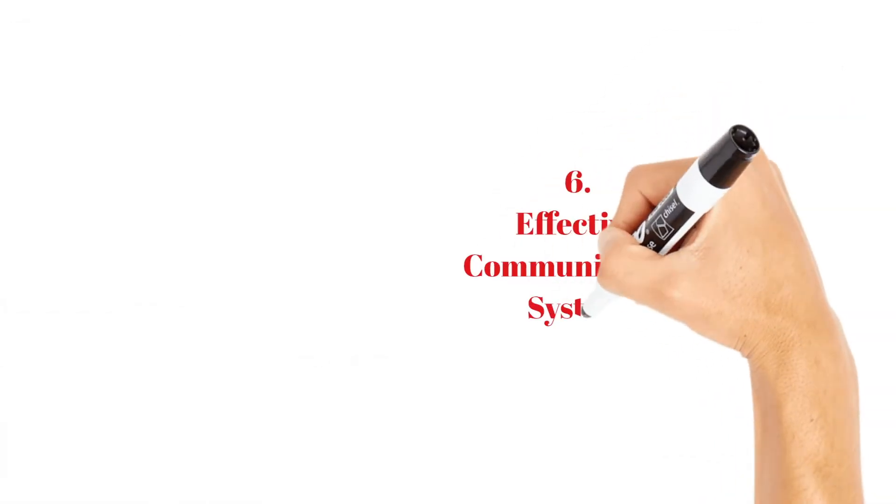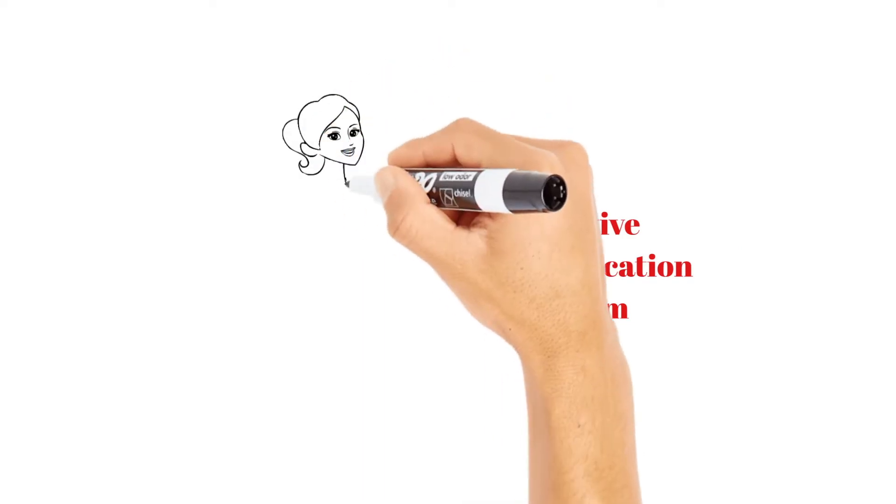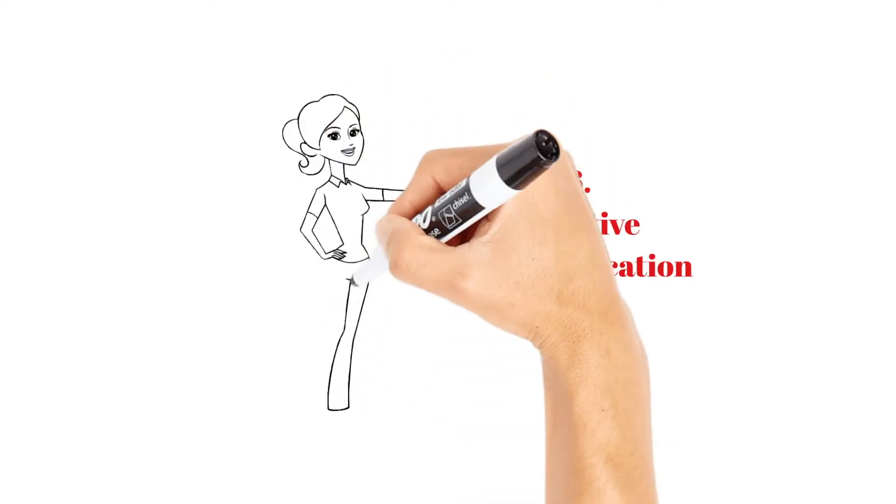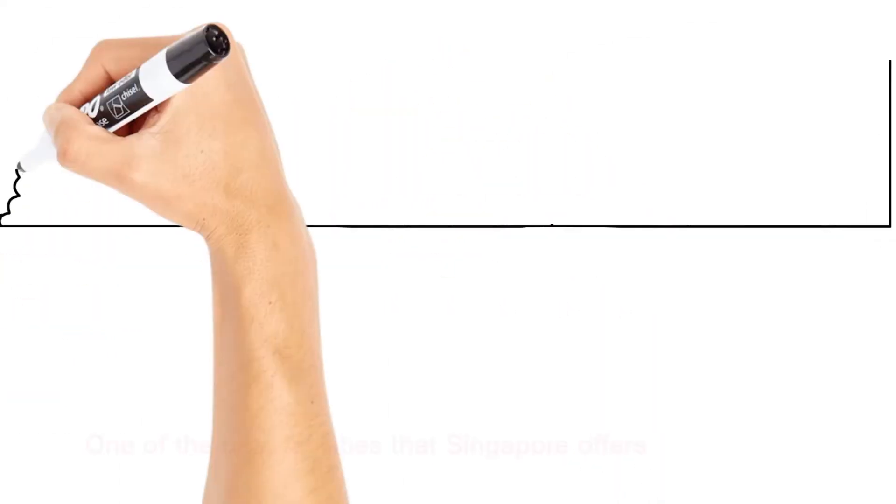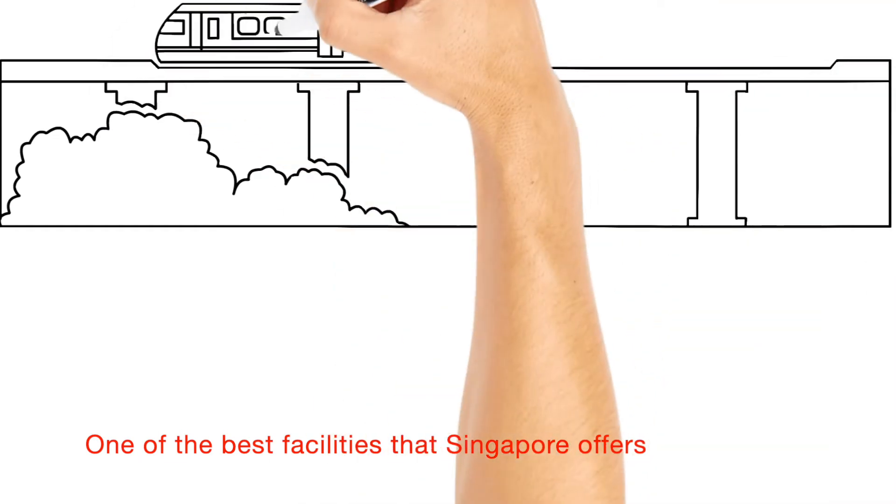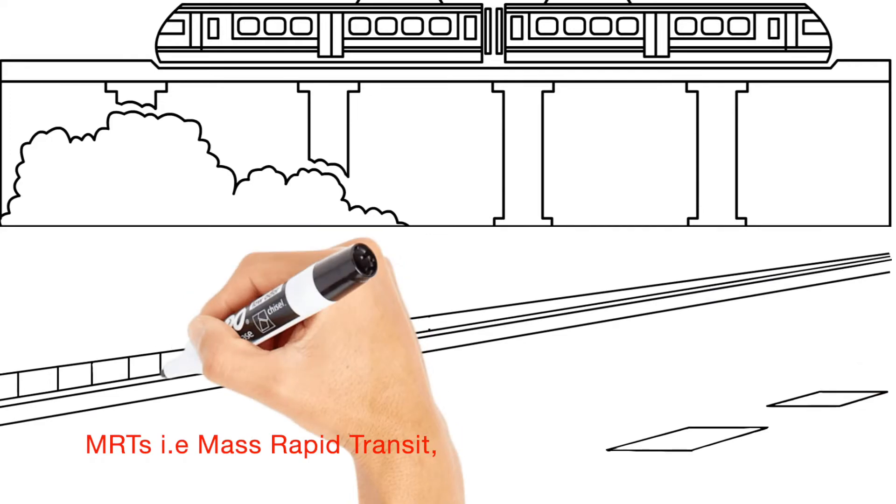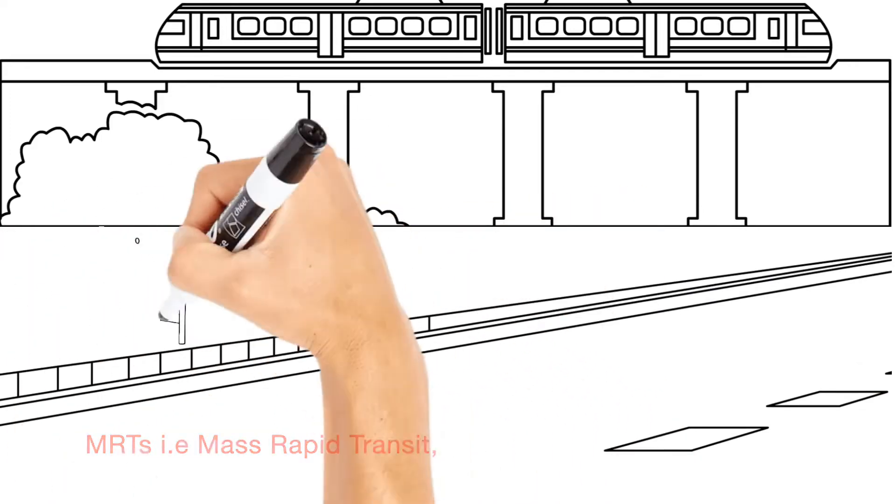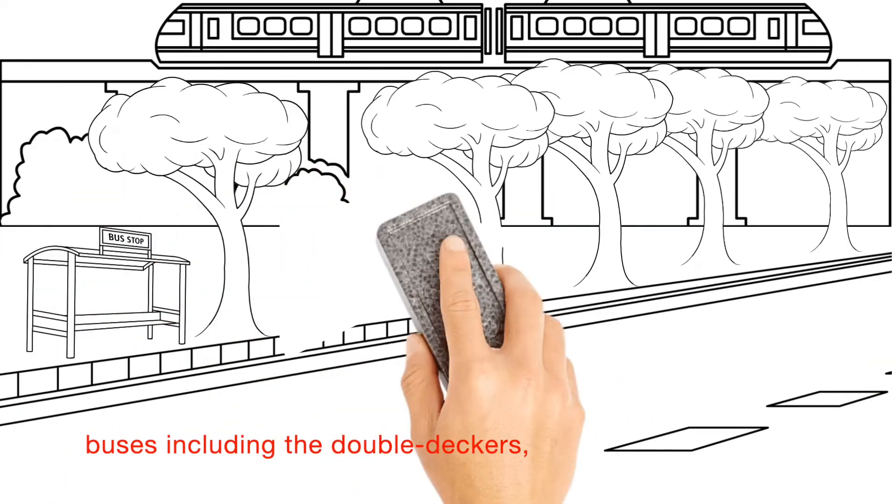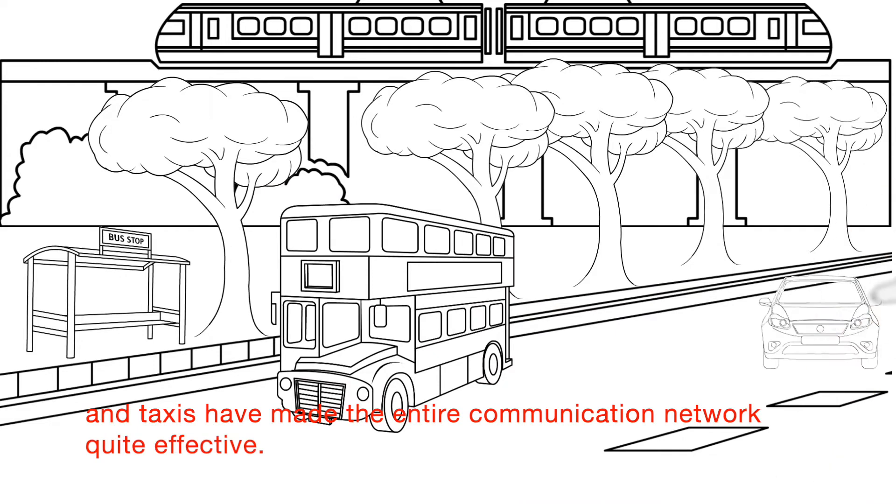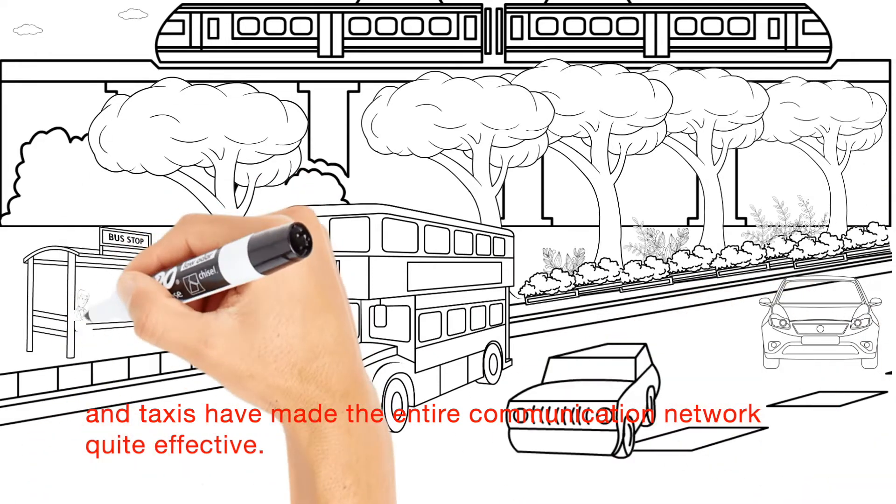Number 6: Effective Communication System. One of the best facilities that Singapore offers is its communication system. MRT, that is Mass Rapid Transit, buses including the double-deckers and taxis have made the entire communication network quite effective.